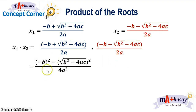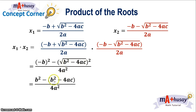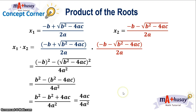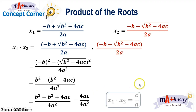It can be multiplied directly as the square of negative b minus the square of the square root of b squared minus 4ac. Simplifying the numerator: negative b squared gives b squared, and the square of the square root of b squared minus 4ac is still b squared minus 4ac. Simplifying again: b squared minus b squared cancels, and negative times negative 4ac gives positive 4ac. So we have 4ac all over 4a squared. With common factor 4a, we simplify to c over a. So we can get the product of the roots by dividing coefficient c by coefficient a.